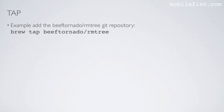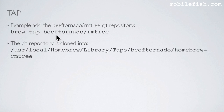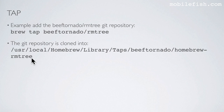Here is an example: let's add the beeftornado/rm3 git repository. Enter this command. After you enter this command, the git repository is cloned into this macOS path. The user is beeftornado — the same beeftornado as referenced in the command — followed by homebrew-dash, and this is the repository name, rm3.